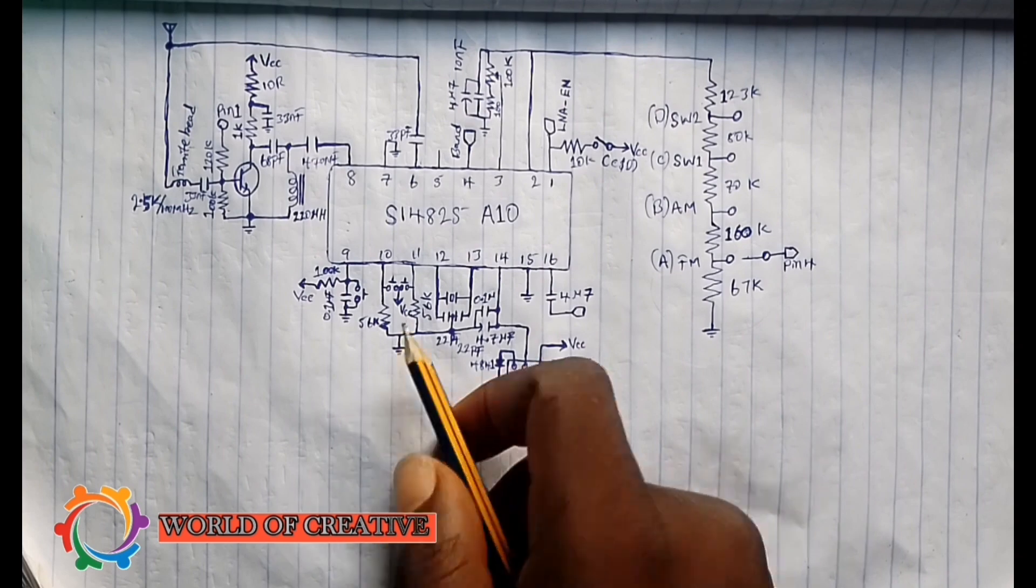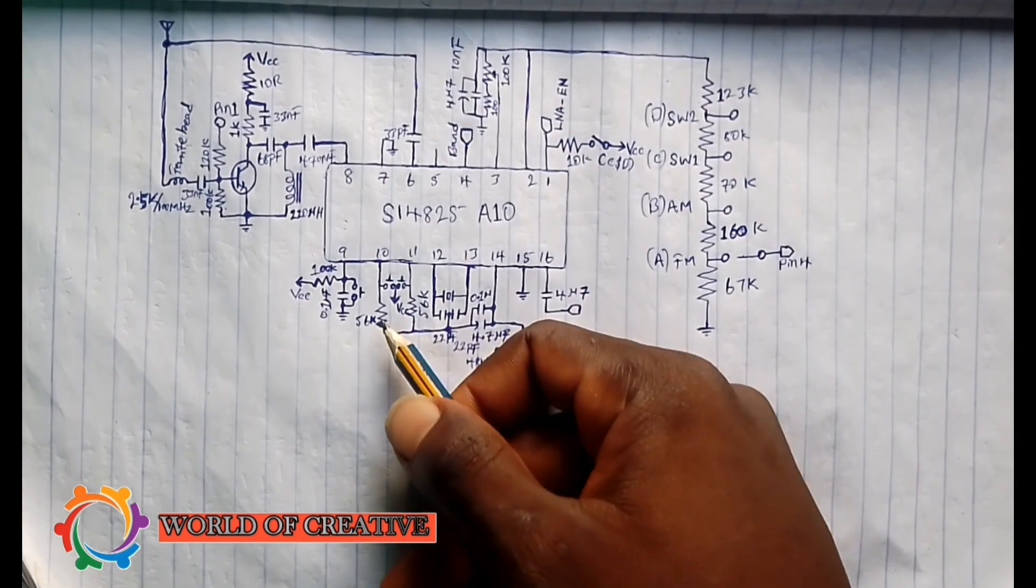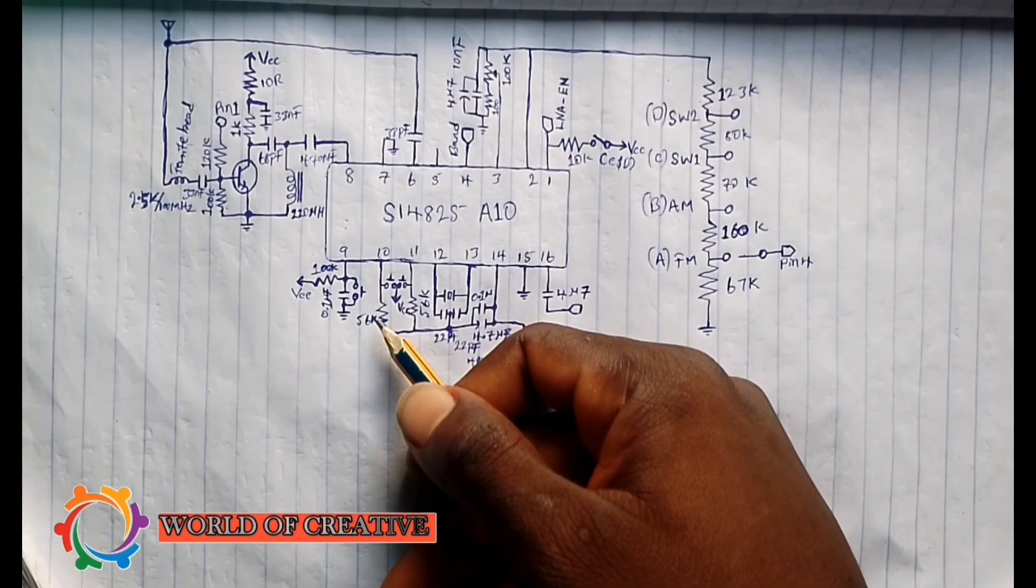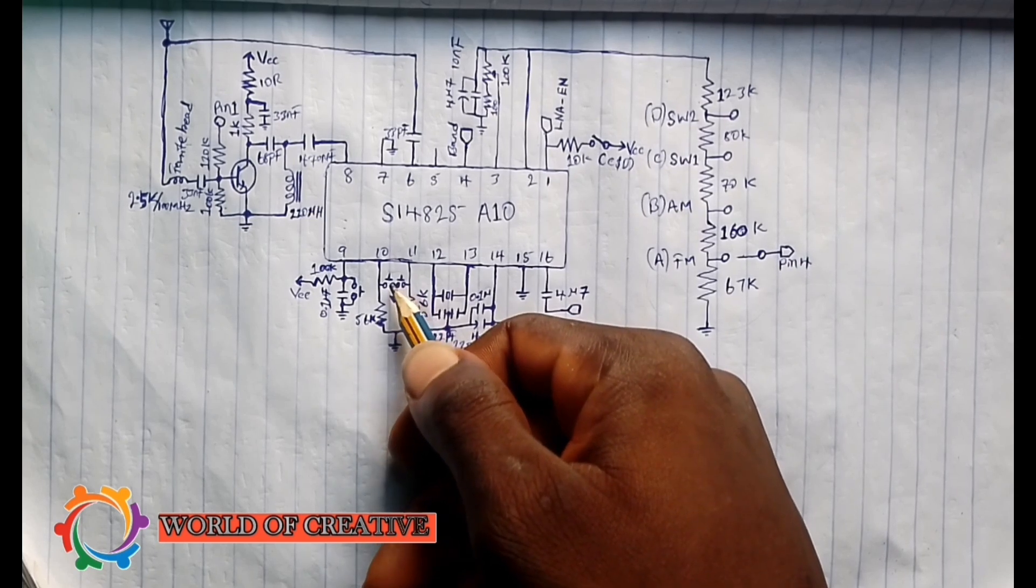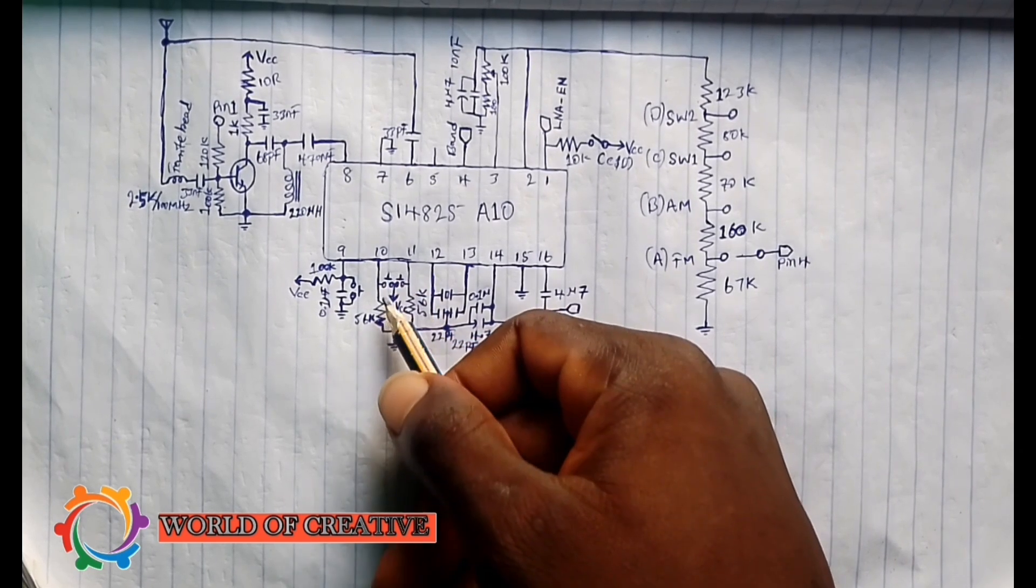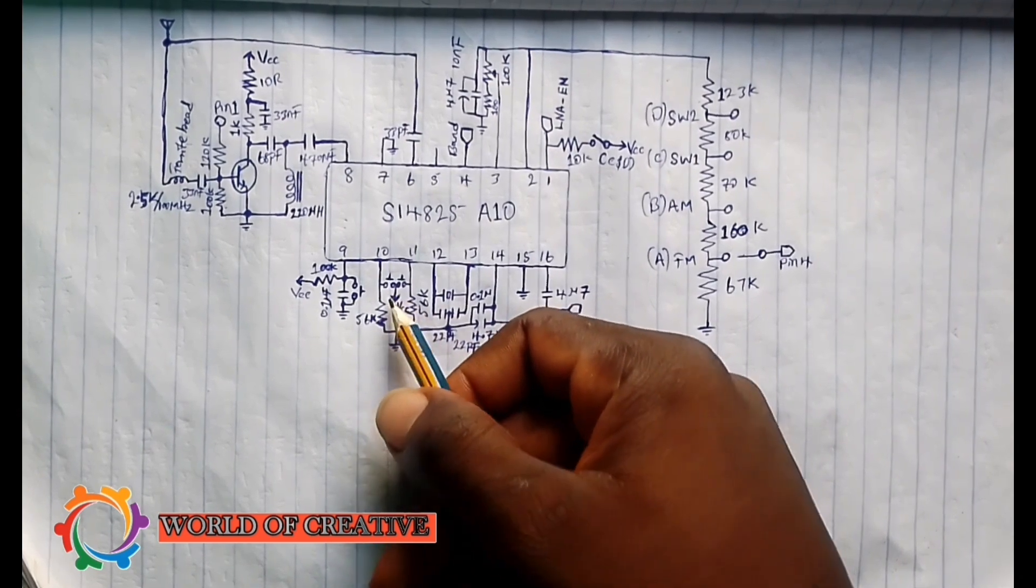The SI4825 has an internal volume adjustment by pressing one of these temporary switches. By pressing once, you can increase or decrease the volume. What actually happens is that when you press the volume up button, the output volume will increase.